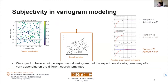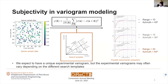Even though we often expect to have one unique experimental variogram, these experimental variograms are not deterministic and can vary depending on the different search templates. Here are some examples: even though we calculate the experimental variogram from the same data set, based on different search templates they end up with three different variogram models, and we don't know which one is more correct. Of course, if you have years of experience in geostatistics you may know the general rules for getting a more realistic variogram model, but that may not be readily available for every case. That's why it's important to make this process automatic and remove the ambiguity and subjectivity issue.